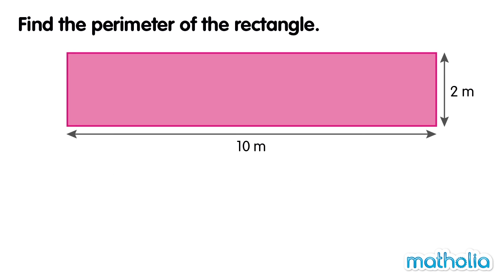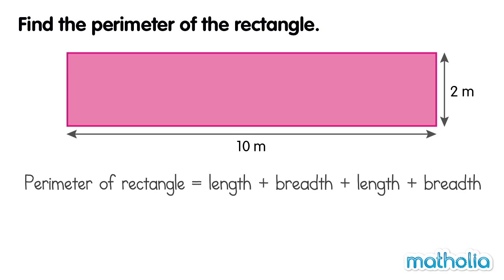Let's find the perimeter of this rectangle. The perimeter is equal to length plus breadth plus length plus breadth. This rectangle has a length of 10 m and a breadth of 2 m.